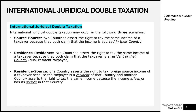Let's start with source-source conflict. This is where two countries assert the right to tax the same income of a taxpayer because they both claim that the income is sourced in their country. For example, Ghana claims this income has a source in Ghana, and Germany also says under German income tax laws this income is sourced in Germany. Because there's a source conflict — Ghana claiming source in Ghana, Germany claiming source in Germany — this gives rise to juridical double taxation, where both territories tax the income in the hands of the same taxpayer.